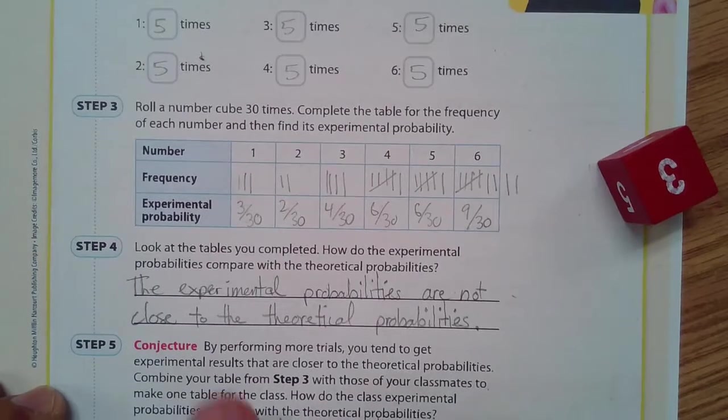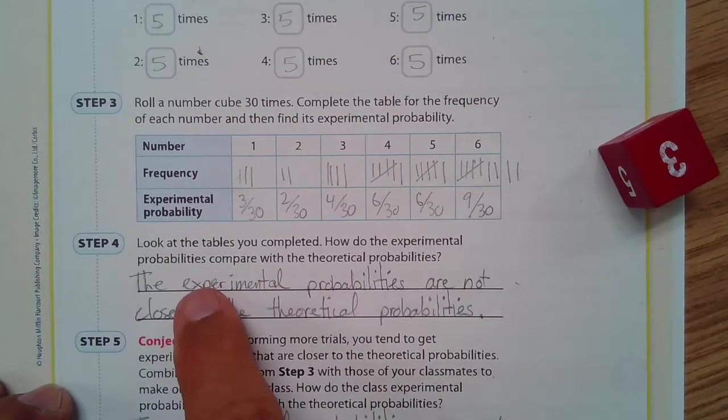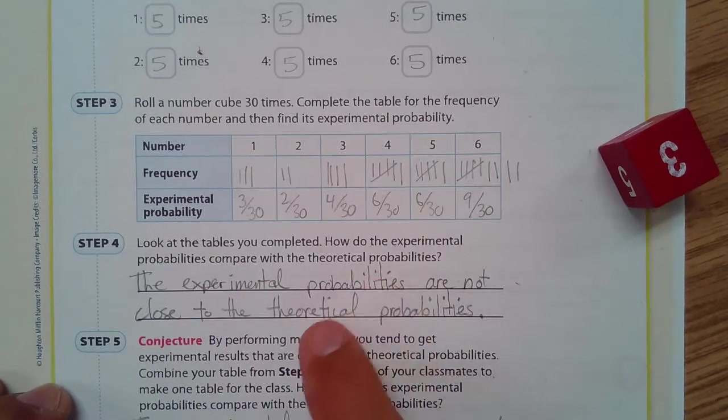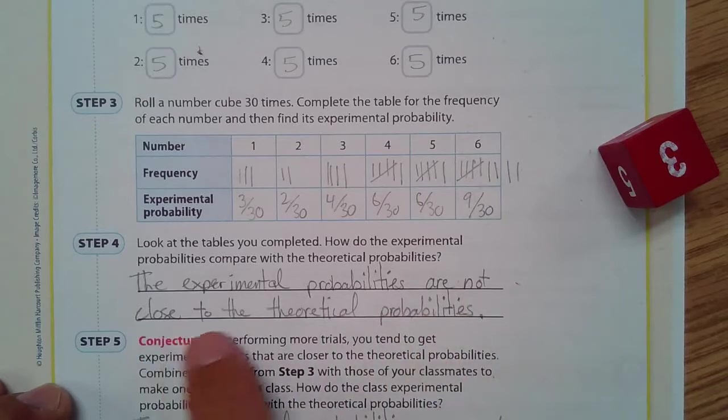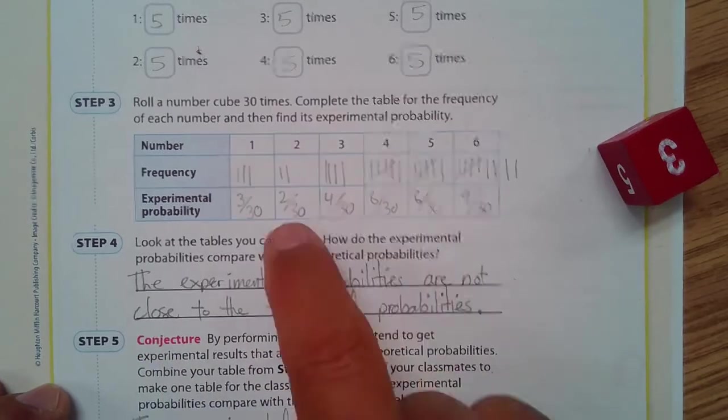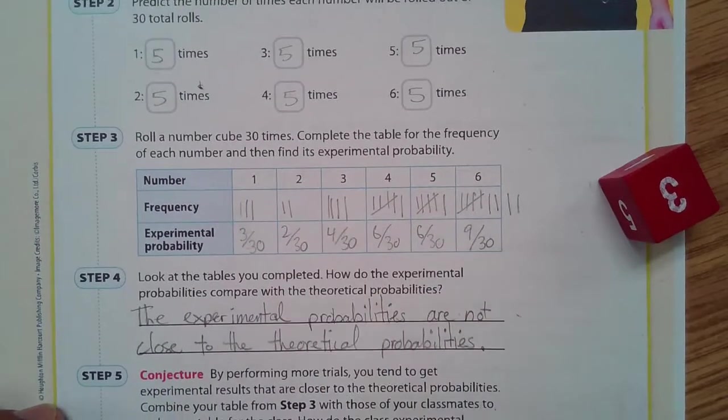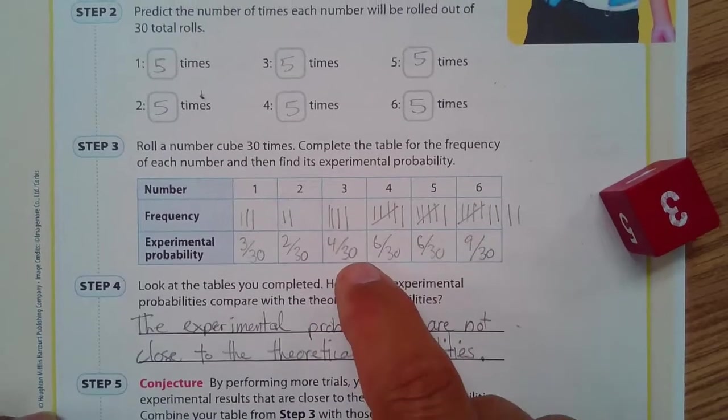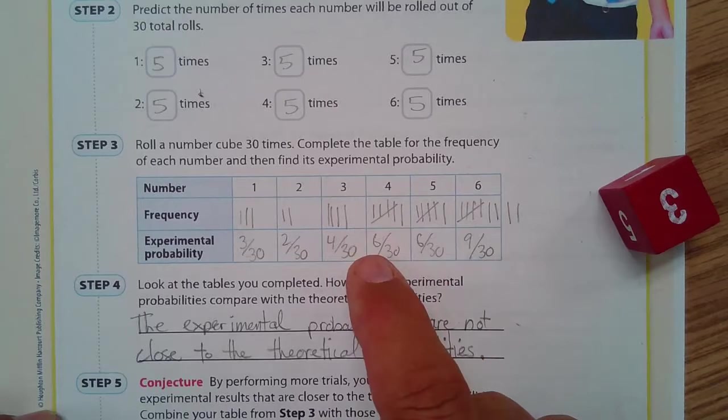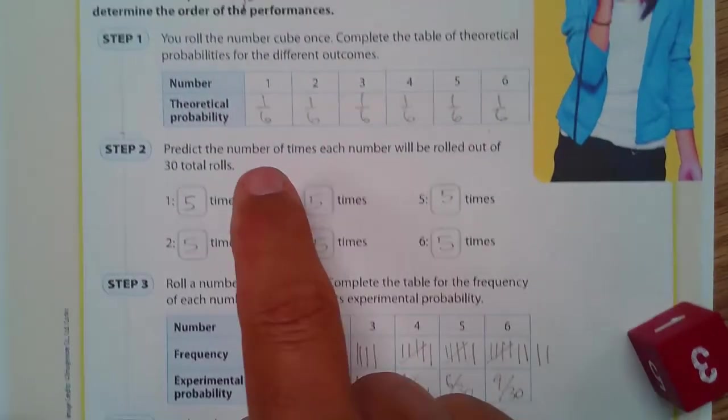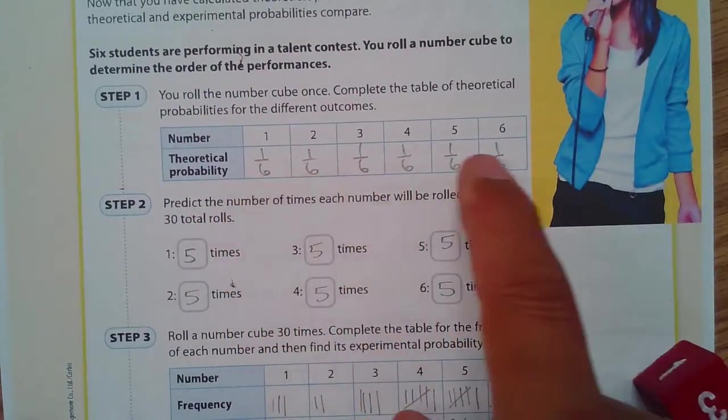Okay. Look at the tables you completed. How do the experimental probabilities compare with the theoretical probabilities? The experimental probabilities are not close to the theoretical probabilities. Yeah, they're just not. And what will happen is if I did this experiment more, more trials, more than 30, if I did 100, 200, 300, it will more closely relate to the theoretical probability.